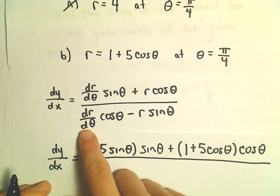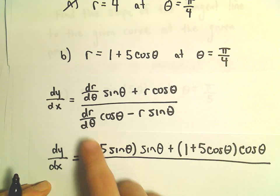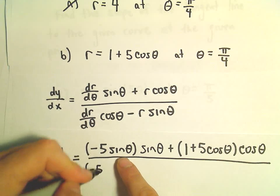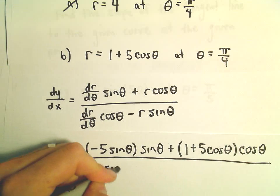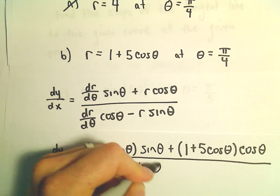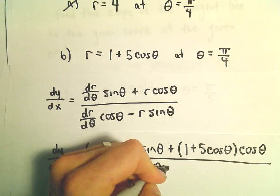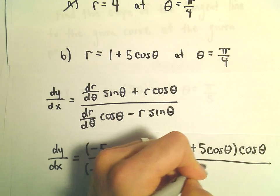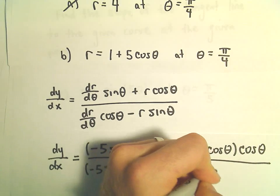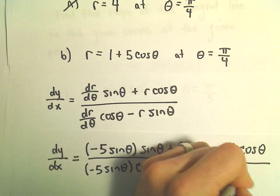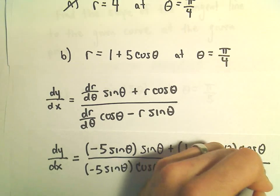All of this is divided by the derivative of r with respect to theta, which is negative 5 sine theta, multiplied by cosine theta, and then minus r — so 1 plus 5 cosine theta — multiplied by sine theta.